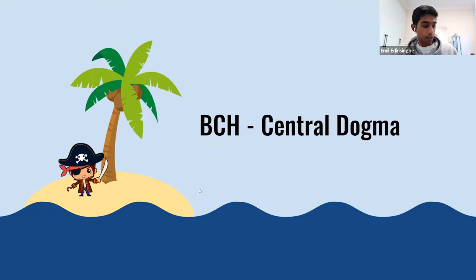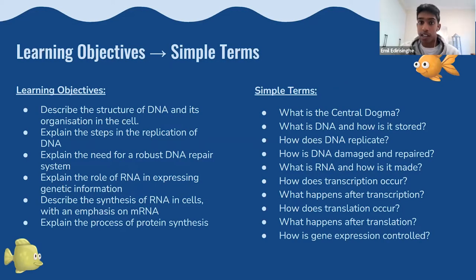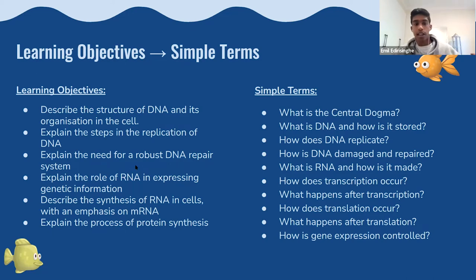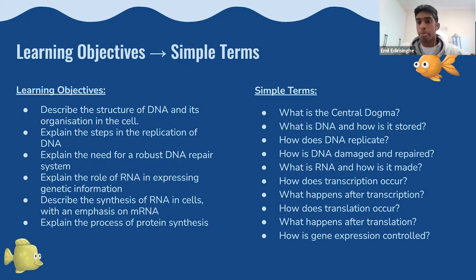So the first thing in my presentation on central dogma is the learning objectives. I think it's really good when starting out with a topic to think about learning objectives and try to put them into simple terms, so you actually know what you need to understand. These are the learning objectives on the left, describing the structure of DNA and its organization, and then these are the simplified versions of those learning objectives, telling you in plain English what you need to know.